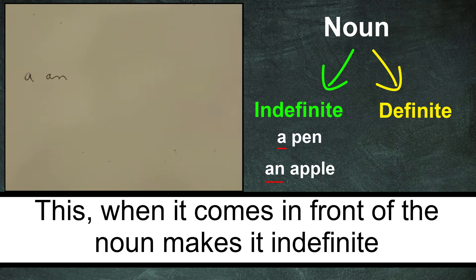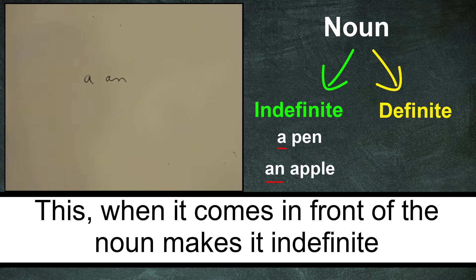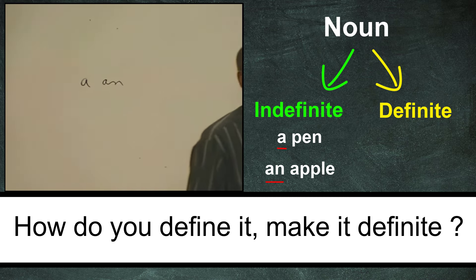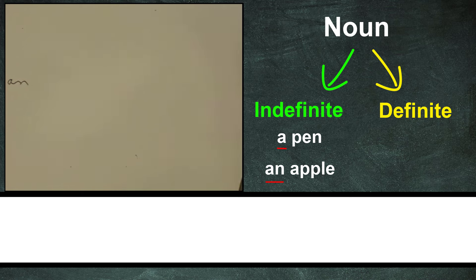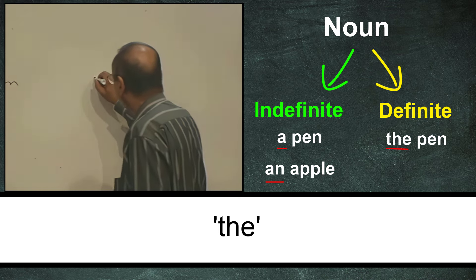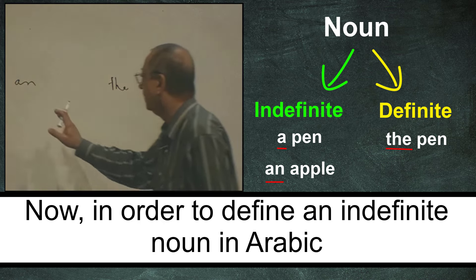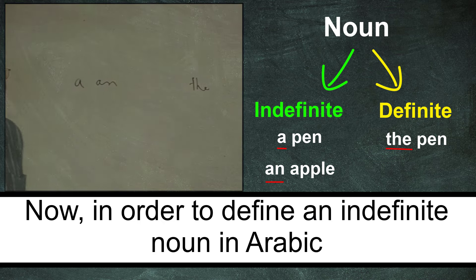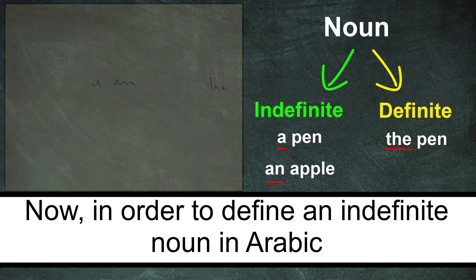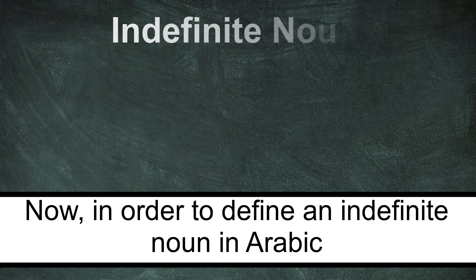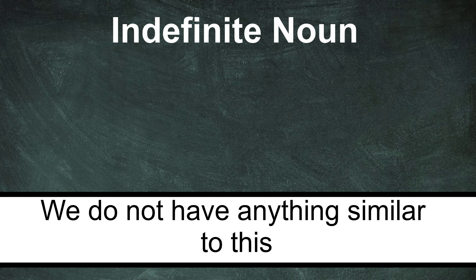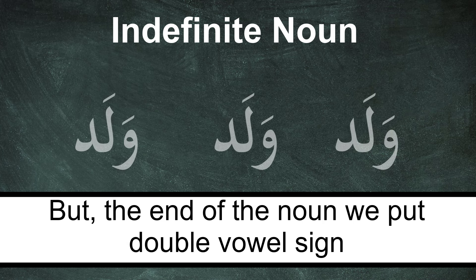Are you with me? When 'a' or 'an' comes in front of a noun, it makes it indefinite. How do you make it definite? You use 'the'. Now, in order to make an indefinite noun in Arabic, we do not have anything similar to 'a' or 'an'. But at the end of the noun, we put a double vowel sign.